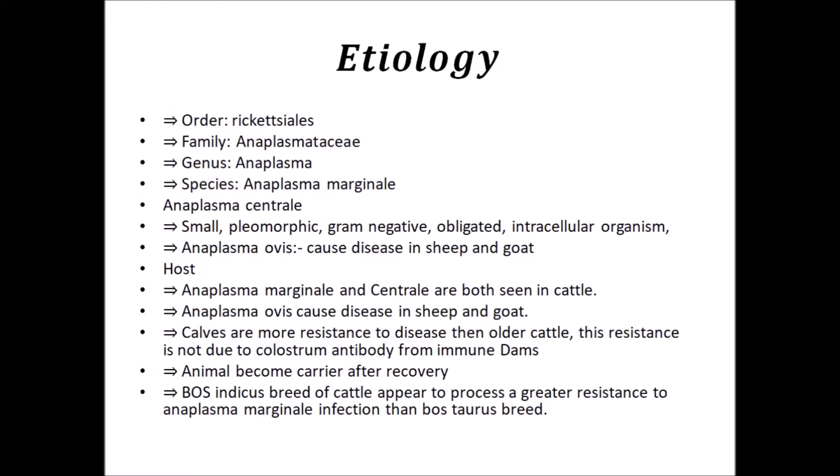The etiology of anaplasmosis — its taxonomy places it in the order Rickettsiales, family Anaplasmataceae, genus Anaplasma, species Anaplasma marginale and Anaplasma centrale. These are small pleomorphic gram-negative obligate intracellular organisms. Anaplasma ovis causes disease in sheep and goat, while Anaplasma marginale and centrale are both seen in cattle.